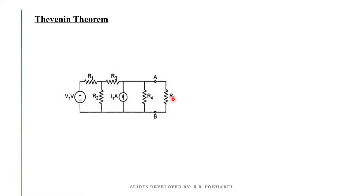If you have R5, you need to remove R5. What does this mean? The voltage source is supplied by V1 volts, and the current source is supplied by I1 ampere.